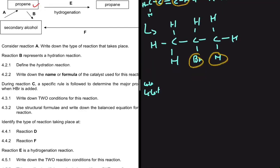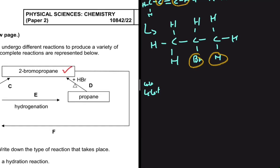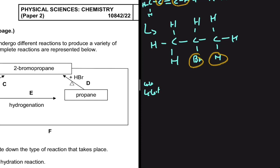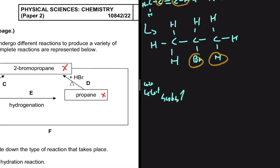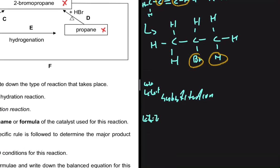For 4.4.1, identify the type of reaction taking place in reaction D. Applying our conditions: do we start with an alkene? No. Do we end with an alkene? No. So we know it is a substitution reaction.